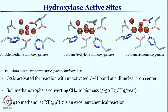These two iron sites are unsymmetrical. We have seen such unsymmetrical iron sites in hemerythrin. This di-iron center is responsible for methane monooxygenase activity — meaning methane is converted to methanol at this site.